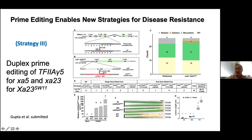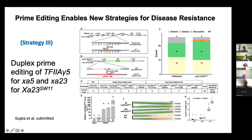Indeed, the gene can be turned on and the plant becomes resistant in response to AvrXa7, which is one of the TAL effectors. The efficiency is very high. We have some imperfect edits but also very good perfect edits. We can combine two different strategies for resistance — incorporating both XA5 and XA23 using dual prime editing — which broadens the spectrum of resistance. The efficiency is very high for both genes simultaneously, almost reaching 40%, and the edited plants become very resistant as expected against different TAL effectors.